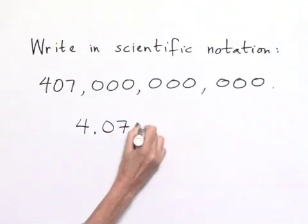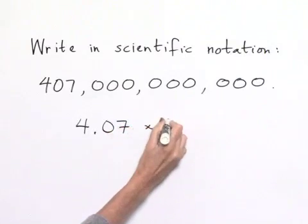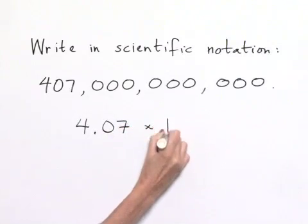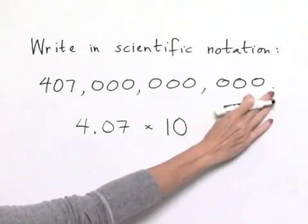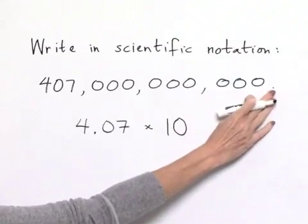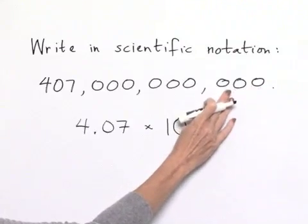Then we multiply that times a power of 10. Recall that we figure out what the power of 10 is by deciding how much we have to move the decimal point. For every place we move the decimal point, that's a power of 10.